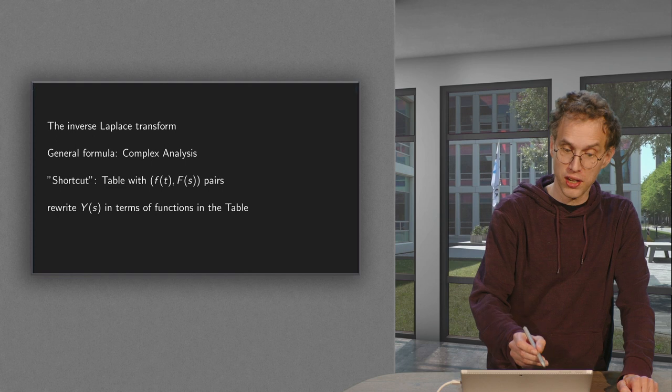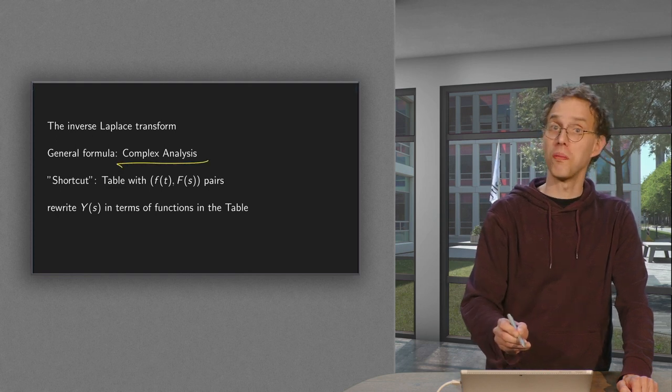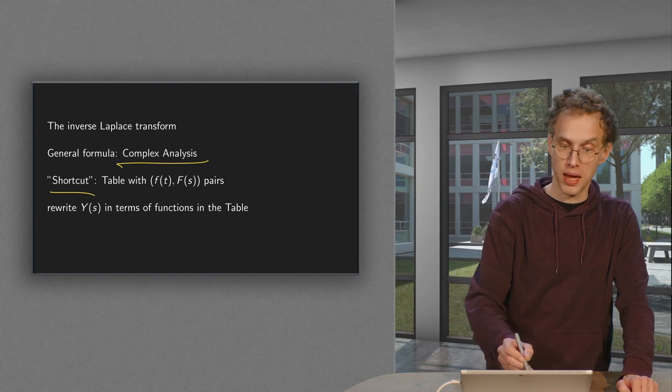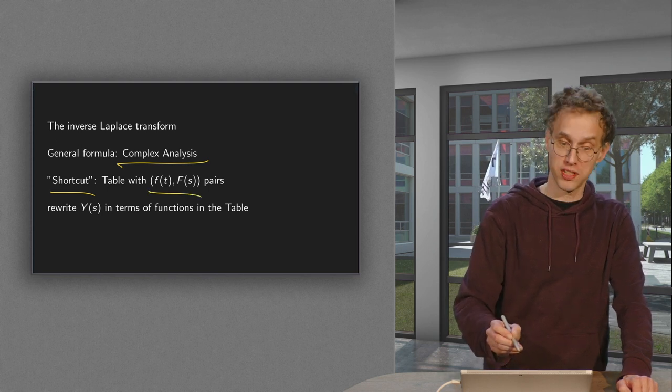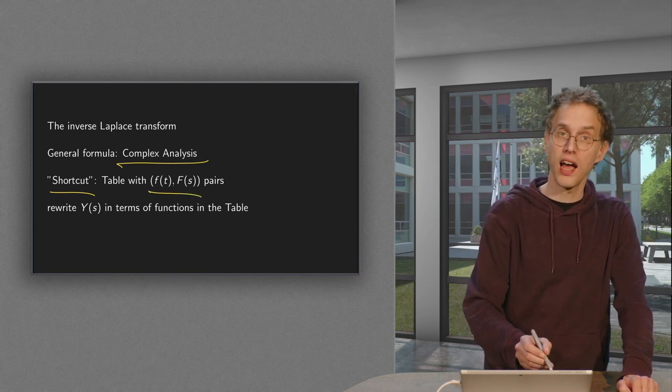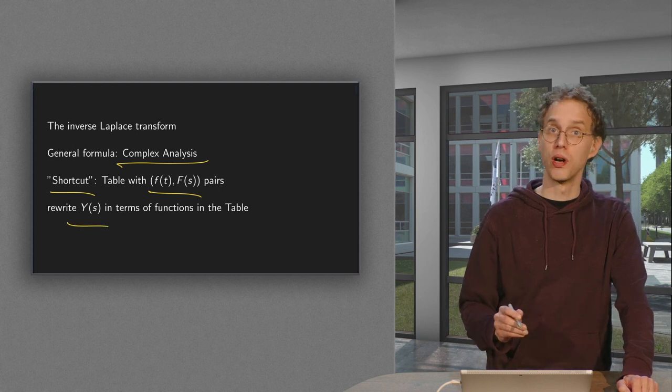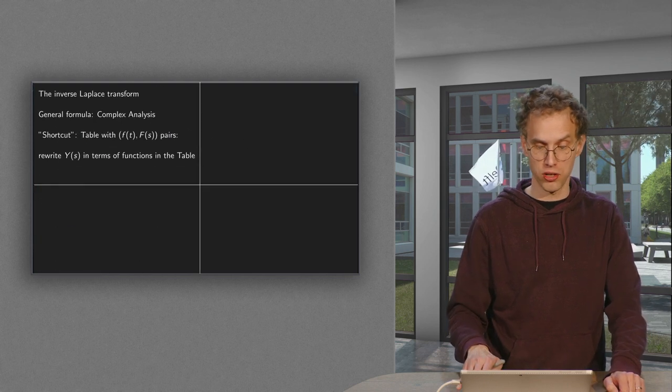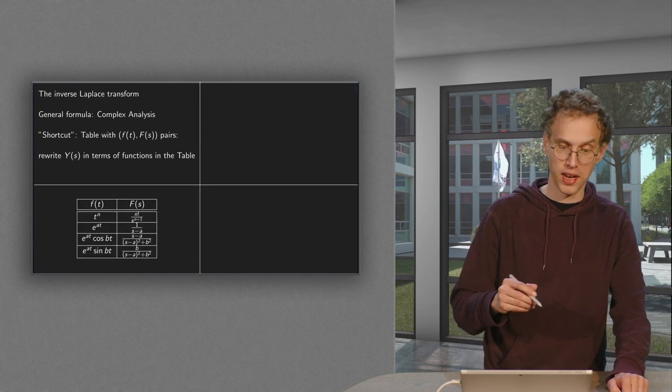So for the general formula, go to complex analysis. Now we will use a shortcut with a table with f(t), f-bar(s) pairs. And we will rewrite our y-bar(s) in terms of functions in this table. So start with a short version of the table.